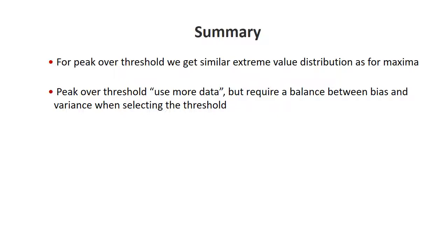To summarize what we've covered with the peak over threshold method: we've shown that peak over threshold yields similar extreme value distributions to block maxima, with the shape parameter xi being important to estimate. The difference is that peak over threshold gives more data, but more data can lead to bias, so we must worry about threshold selection — it affects the bias-variance trade-off. To address this, diagnostic plots such as the Hill plot and mean excess function plot allow us to identify a good threshold, even by visual inspection.